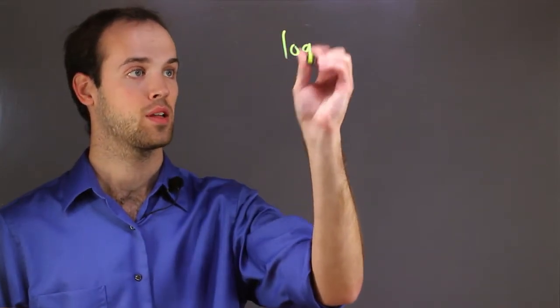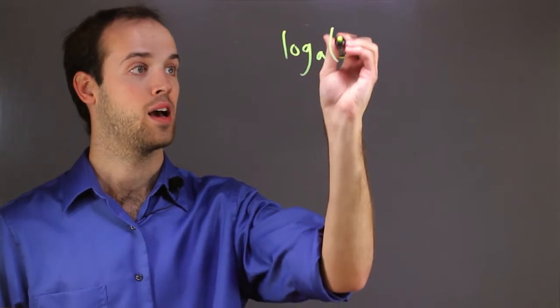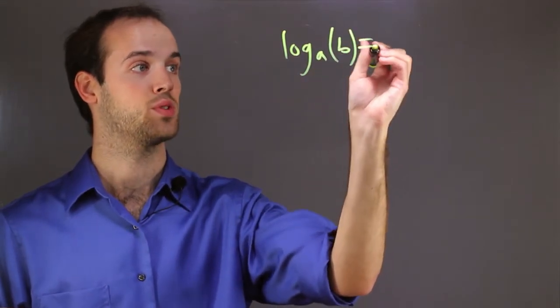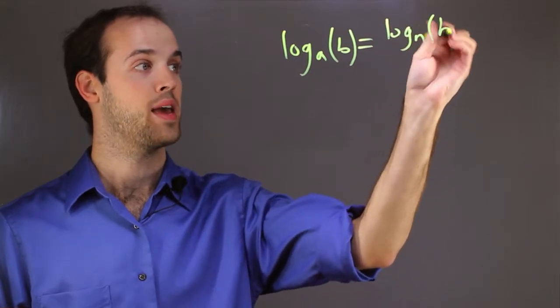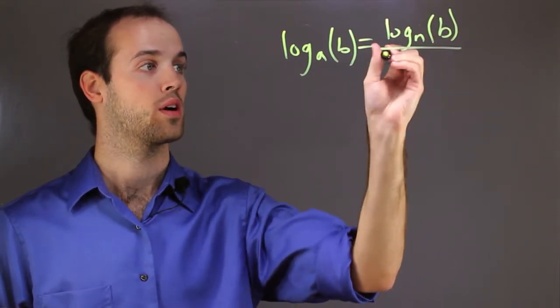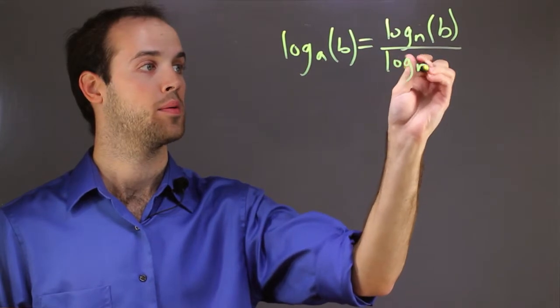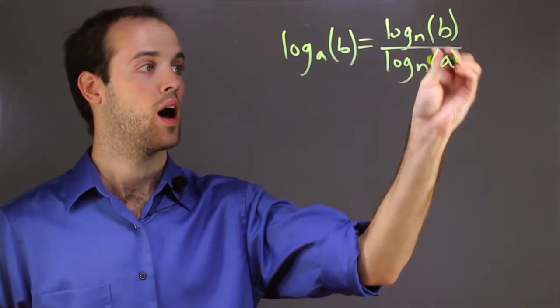Using the change of base formula to evaluate logarithms can make evaluating the logarithm a lot easier, especially if you're only working with a standard scientific calculator. It is stated like this: log base a of b is equal to log base n of b over log base n of a.